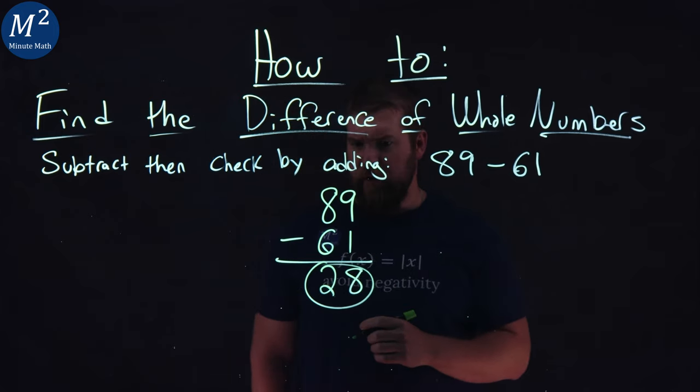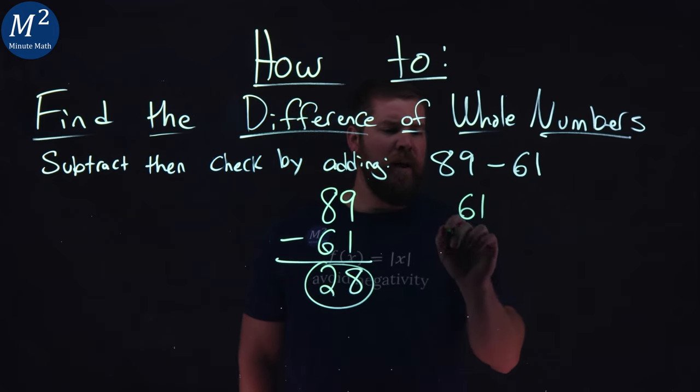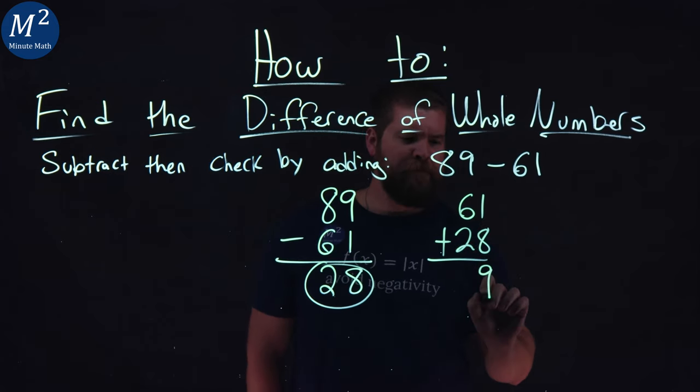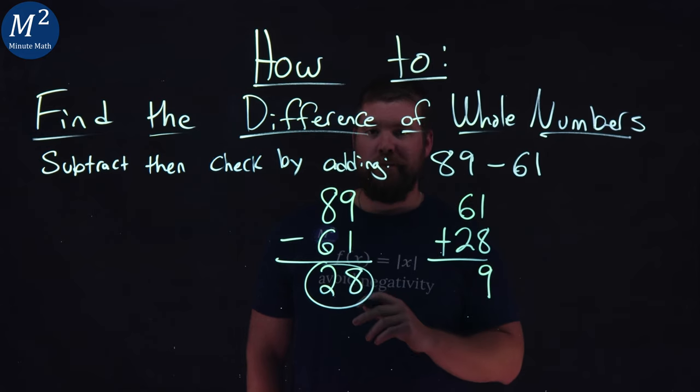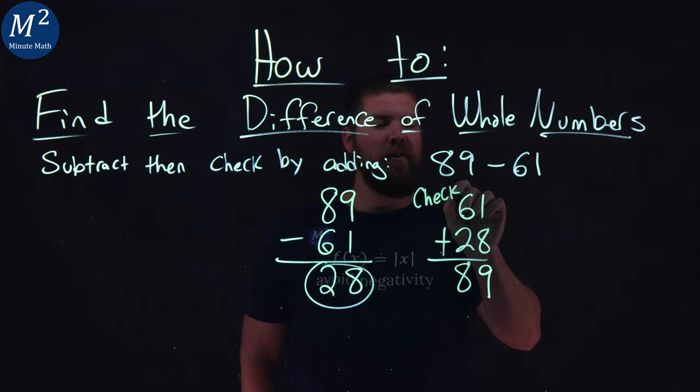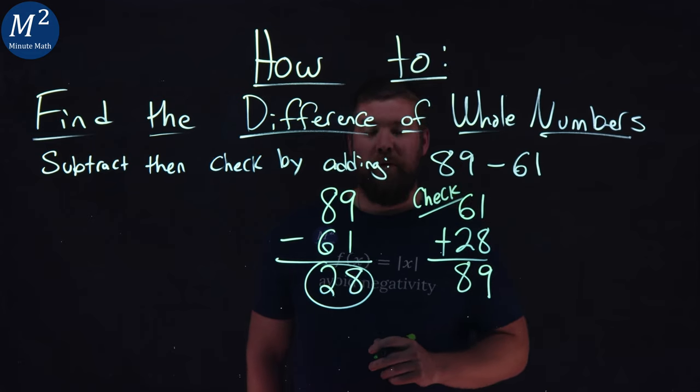Let's go check our answer here. I'm going to take 61 and add 28 to it. 1 plus 8, good old 9, and 6 plus 2 gives me an 8. And this is our check here, and you can see that it lines up with our answer.